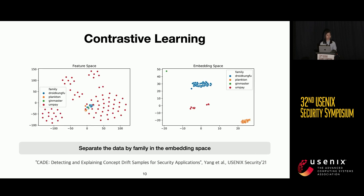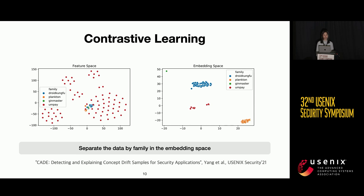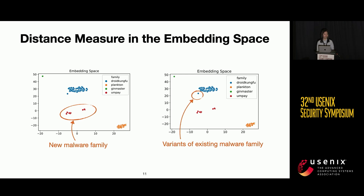Why can contrastive learning help us do better active learning? To do contrastive learning, we need labels of similar and dissimilar pairs of samples. Using four malware families — where one, UMP, is not in the training set — we label pairs as similar if they are from the same family, and dissimilar if from different families. Contrastive learning can then separate the data very well by family in the embedding space. The T-SNE plot shows that in the original feature space there is no clear pattern, but in the embedding space different families form distinct, well-separated clusters.